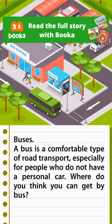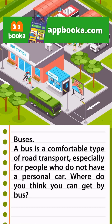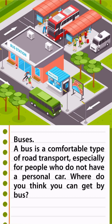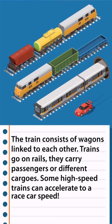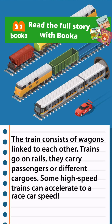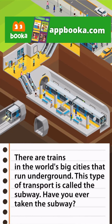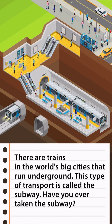Buses are a comfortable type of road transport, especially for people who do not have a personal car. Motorcycles are very light and fast road transport, designed for two people, who both must wear helmets. The train consists of wagons linked to each other and goes on rails, carrying passengers or cargo. Some high-speed trains can accelerate to race car speed. In big cities, trains run underground — this is called the subway.